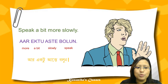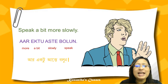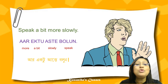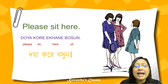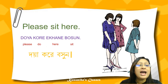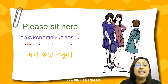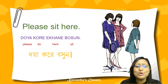Speak a bit more slowly — aar ikhtu aaste bolun. Aar means more, ikhtu means a bit, aaste means slowly, bolun means speak. Please sit here — doya kore ekhane boshun. Doya means please, kore means do, ekhane means here, boshun means sit.